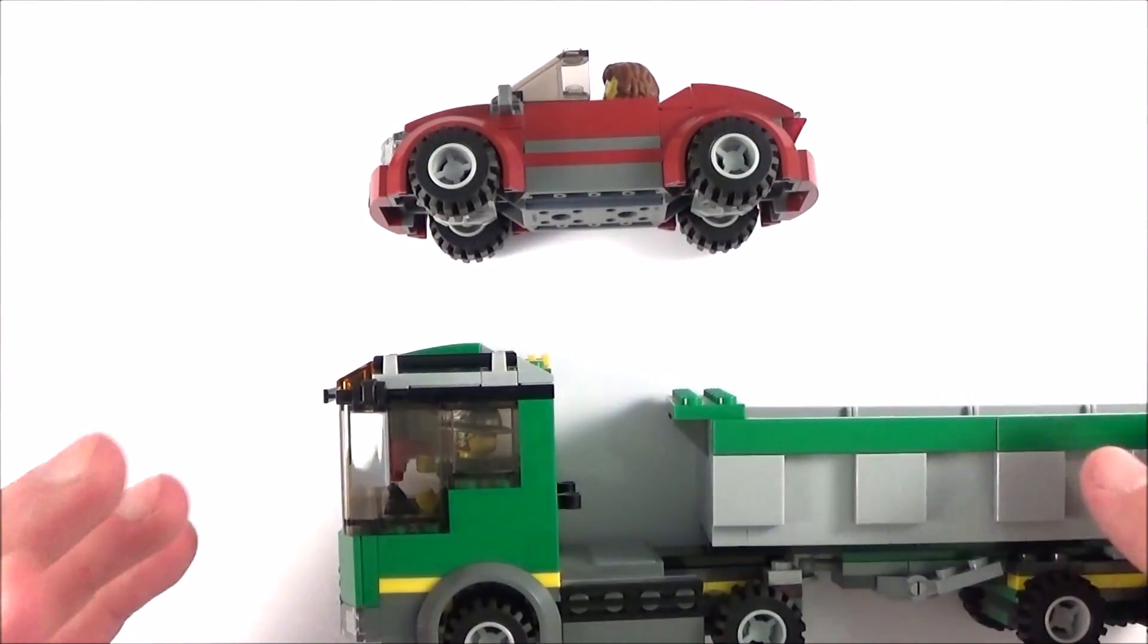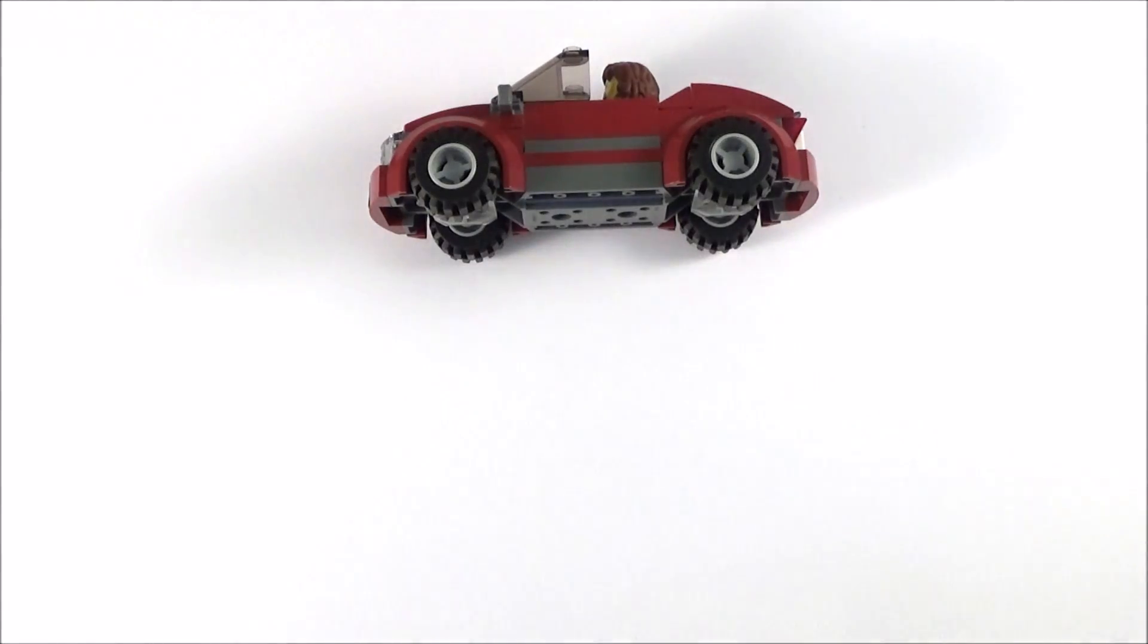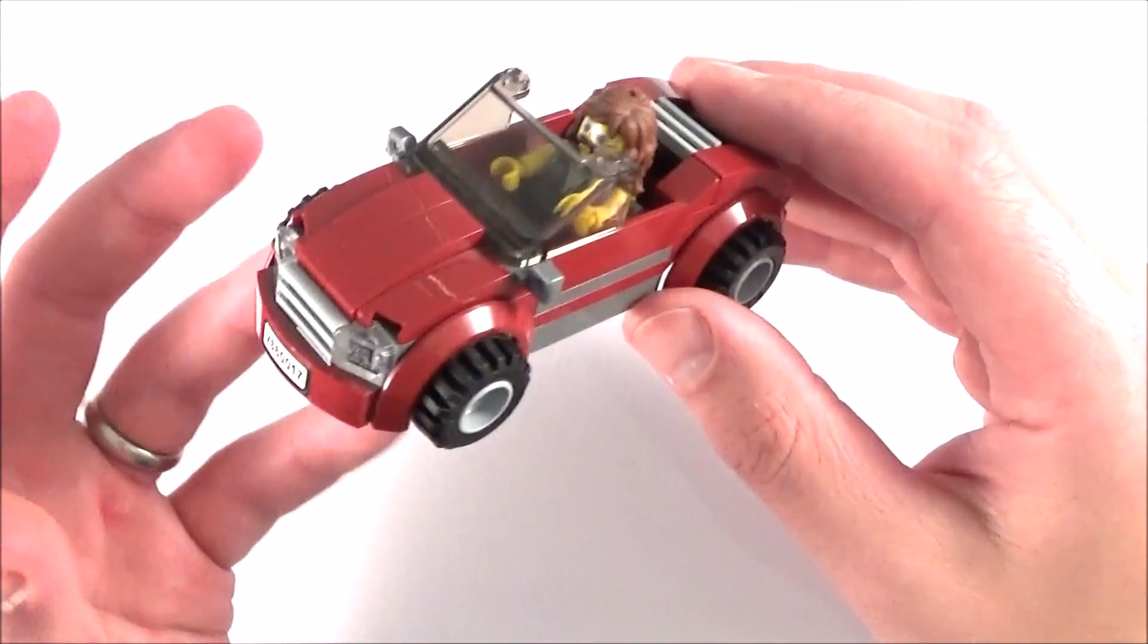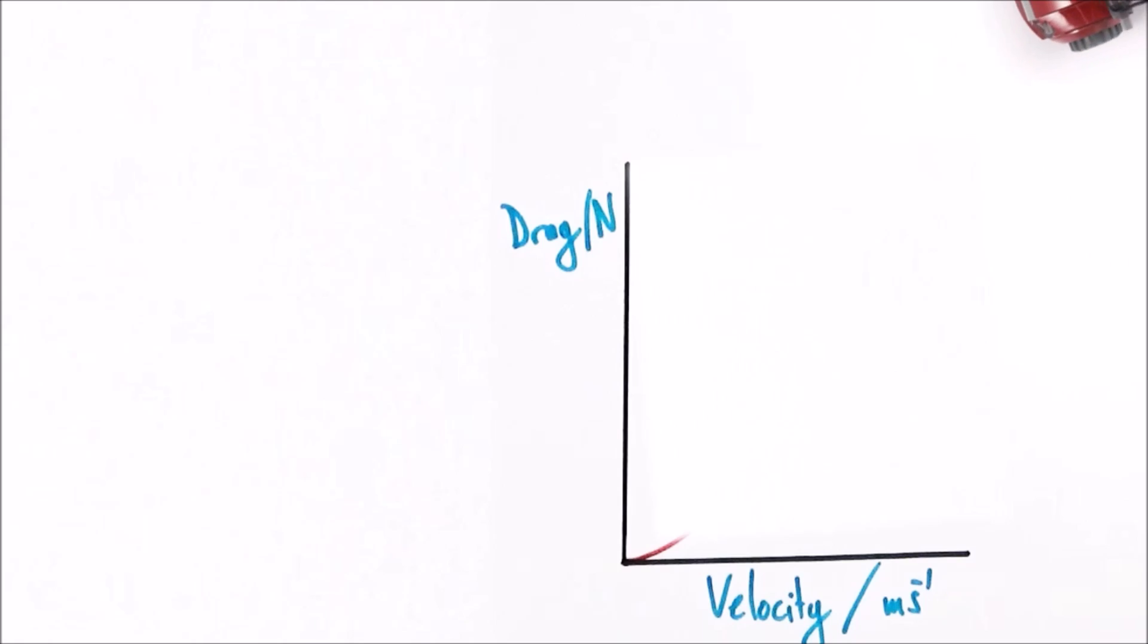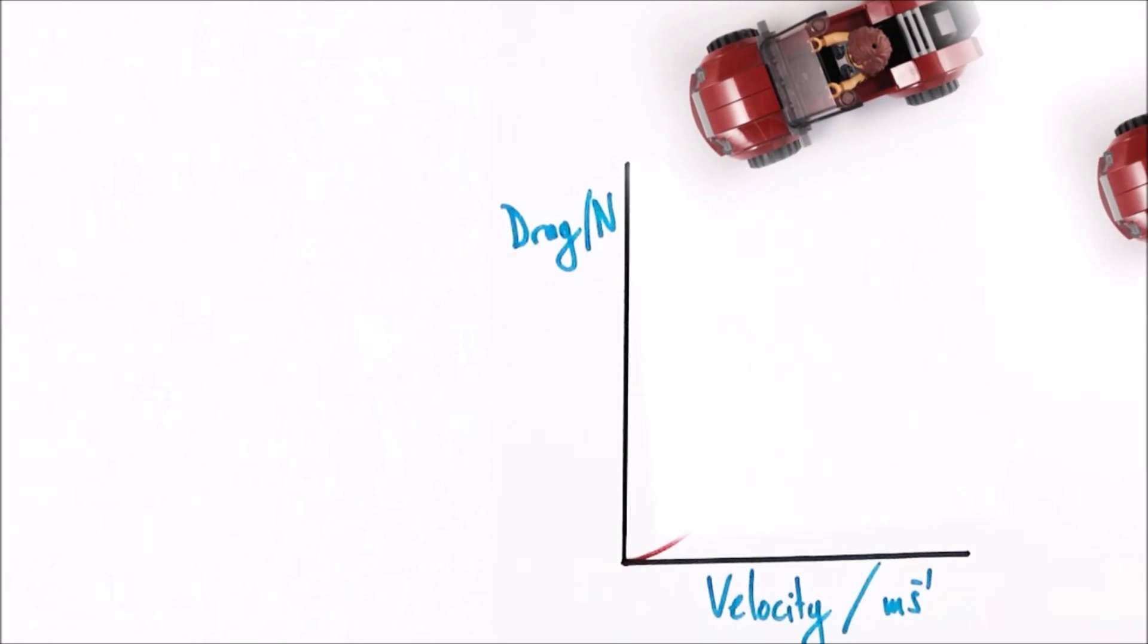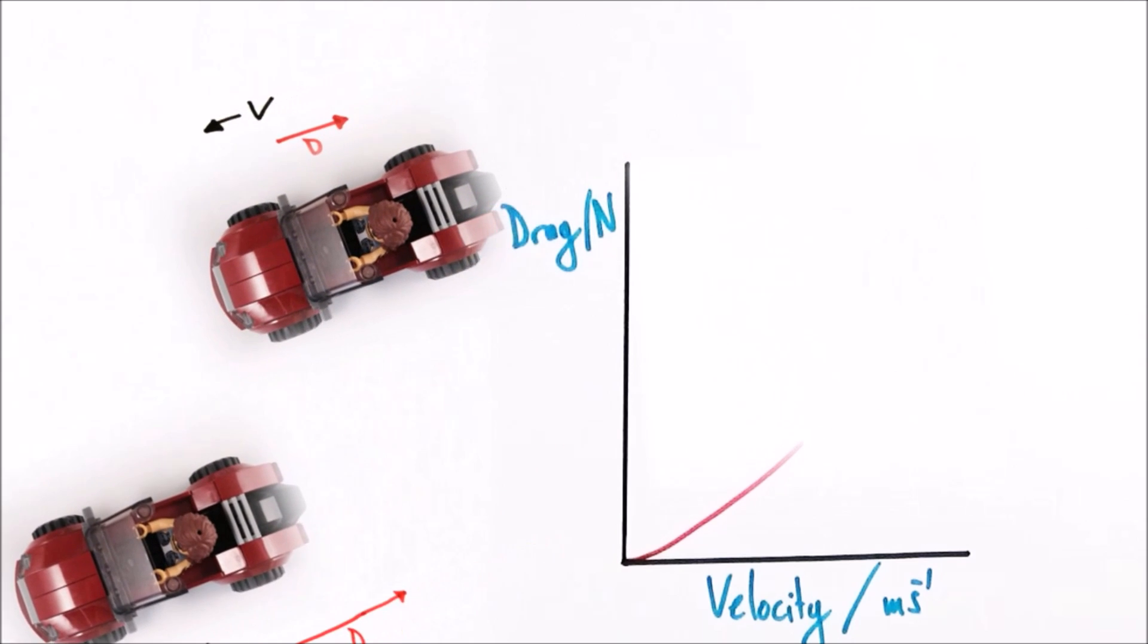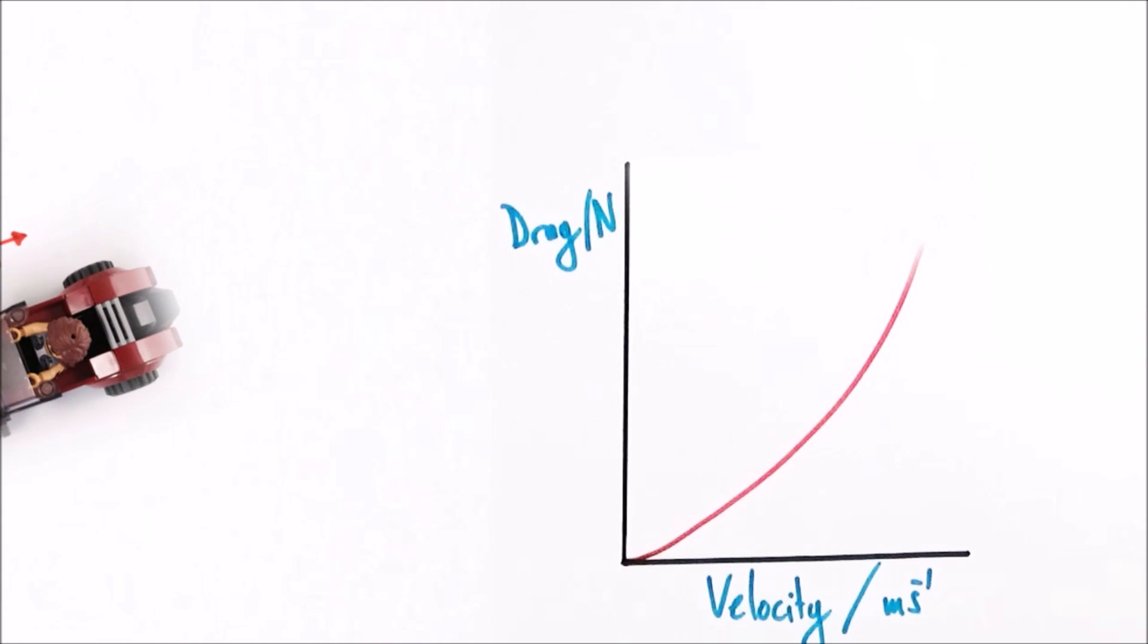The other thing that affects the size of the drag force is the velocity. So if we have a larger velocity the drag force is going to get bigger as well. But it doesn't just get bigger with a linear relationship. If we have something going at twice the speed, then the drag force goes up by a factor of four.